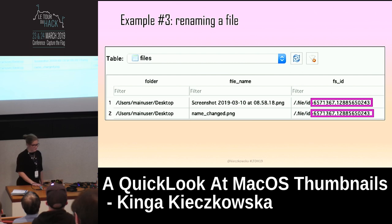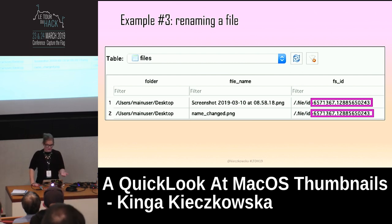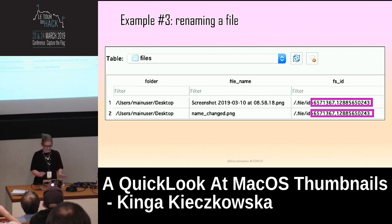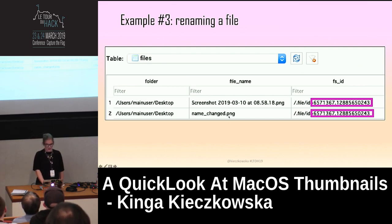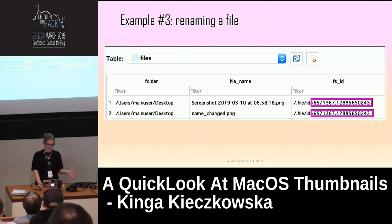Third example: renaming a file. I literally took a screenshot — if you have a Mac, you know it gets saved with that weird name format with the date and time. Then I changed the name to 'name changed'. Again there are two entries, and you can see that the volume ID and the file ID are the same.